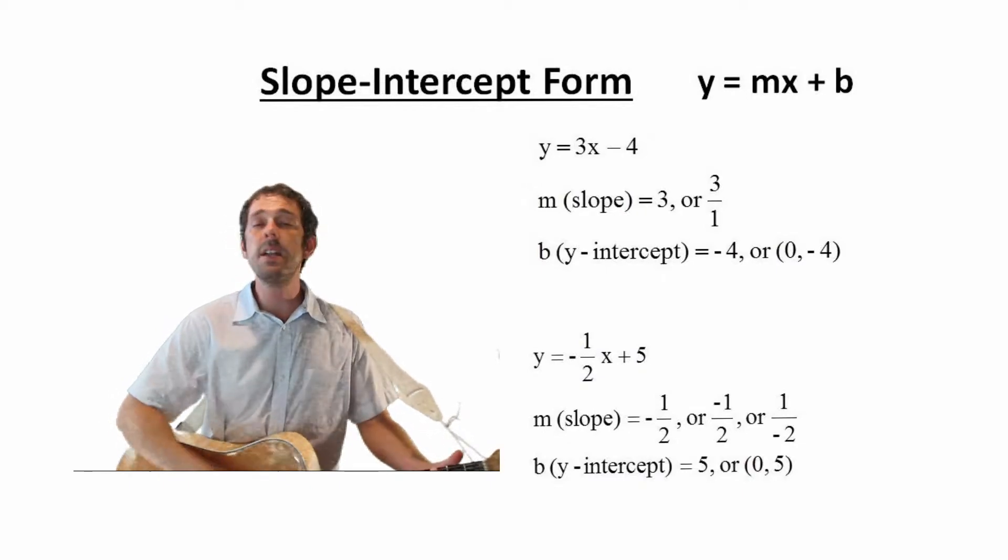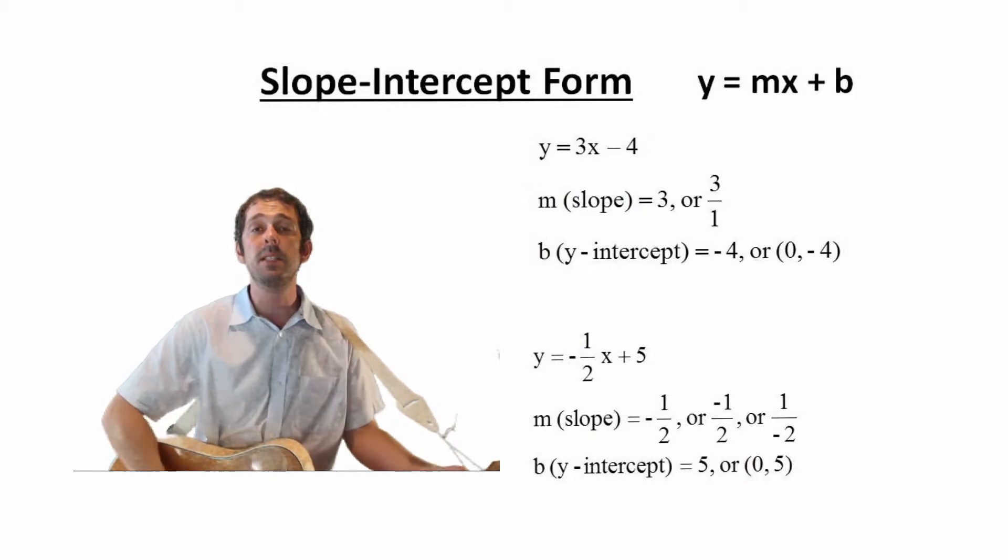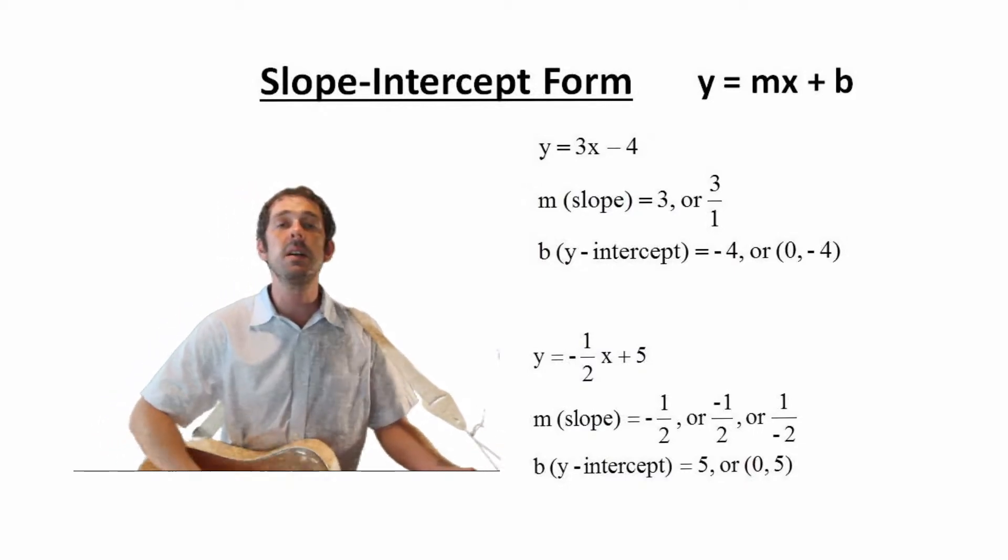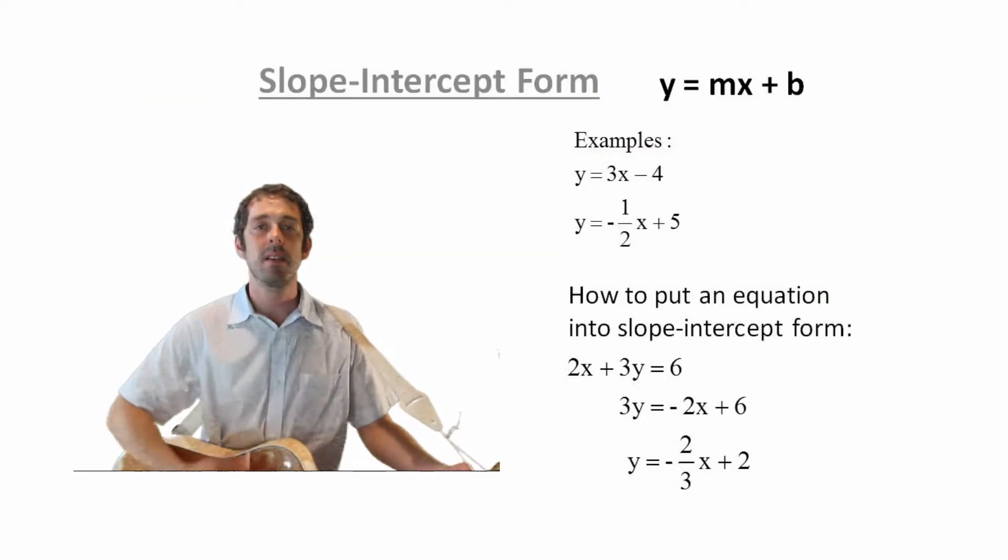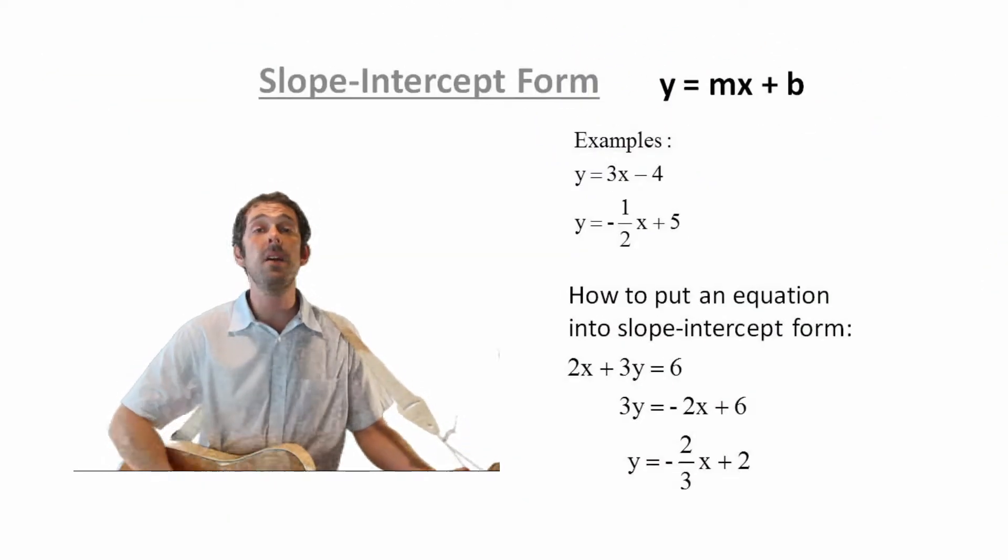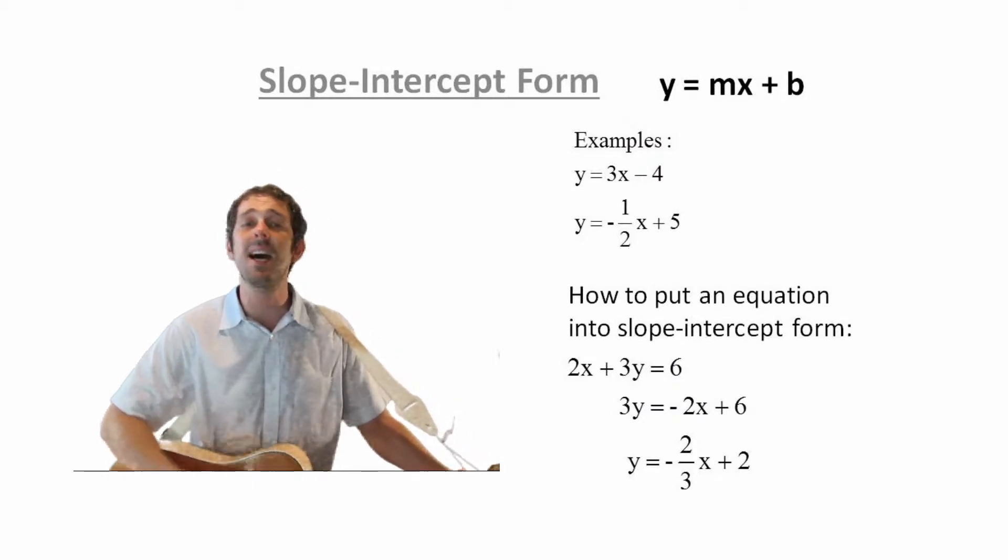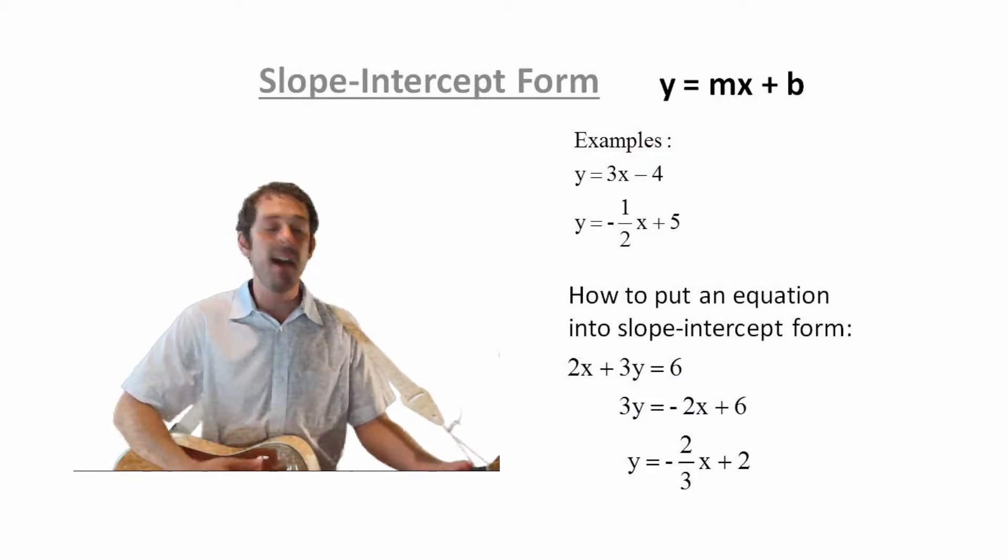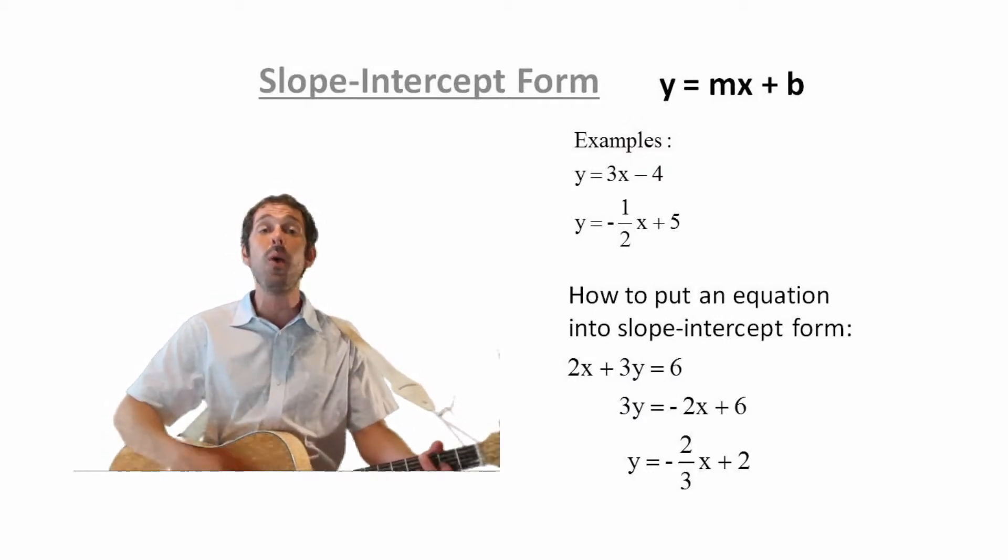Slope-Intercept Form: y equals mx plus b. m is the slope, b is the y-intercept. Move the entire x-term to the other side and change its sign, and then divide by the number that's in front of y.